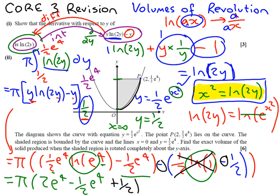And let's just read the question. Find the exact volumes. So we do need to just simplify that a little bit. 2 is 4 over 2. So it's going to be pi e to the 3 over 2. 3 over 2 e to the 4 plus a half.